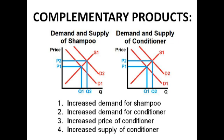There will be an increased supply because when demand for the second product goes up, there will be a period of disequilibrium with excess demand, meaning price will rise. Because price rises, more suppliers can enter the market.